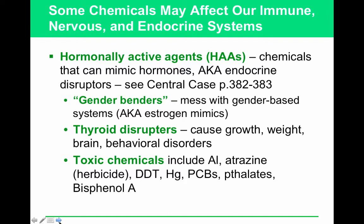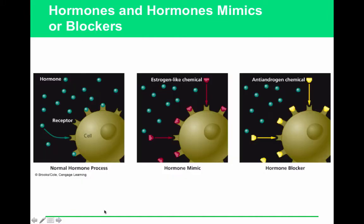Gender benders are estrogen mimics. If males ingest low levels of estrogen, they do not grow secondary female sexual characteristics — it usually prevents weight loss and lowers the effect of testosterone. Thyroid disruptors can cause a wide variety of additional problems. The slide shows the normal hormone process alongside a hormone mimic and a hormone blocker for comparison.